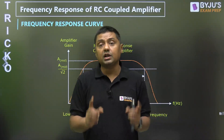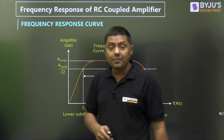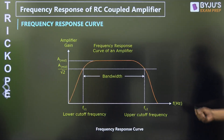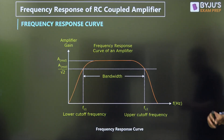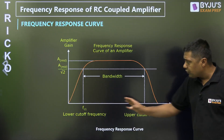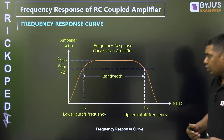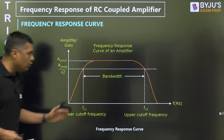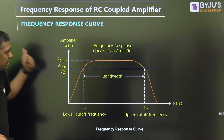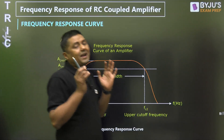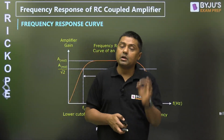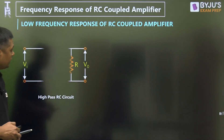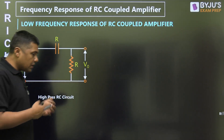In this frequency response curve there are two cut-off frequencies: one is called the upper cut-off frequency and the other is called the lower cut-off frequency. The difference between the upper and lower cut-off frequencies is called the bandwidth. At the cut-off frequency, the gain becomes 1/√2 of the maximum gain and the power becomes half of the maximum power.